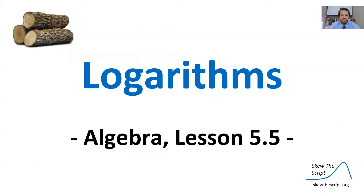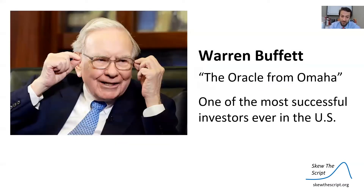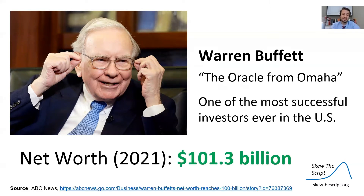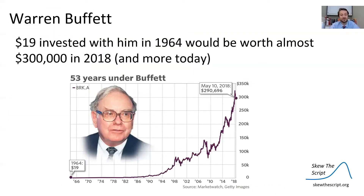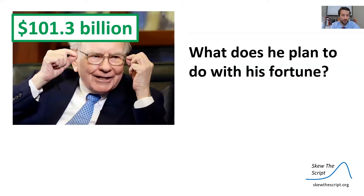Welcome to Lesson 5.5 of the Skew the Script Algebra Series. Today we'll be discussing logarithms. Specifically, you may have heard of Warren Buffett, often dubbed the Oracle of Omaha. He's one of the most successful investors ever in the United States. His net worth as of 2021 was in excess of $100 billion. Given that Warren has $101.3 billion at his disposal, what does he plan to do with his fortune?